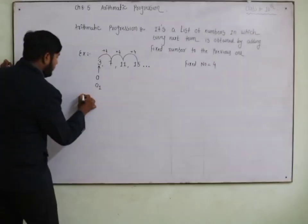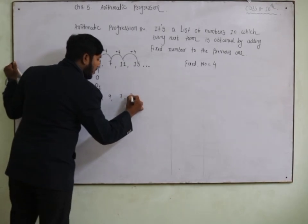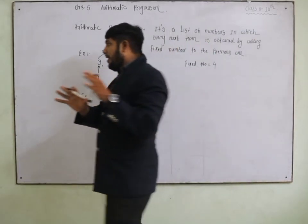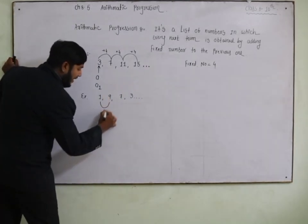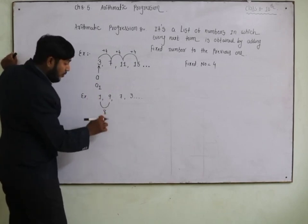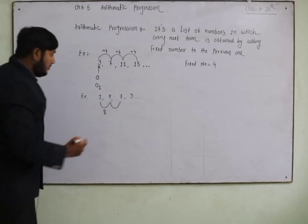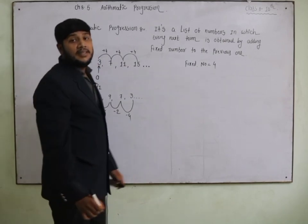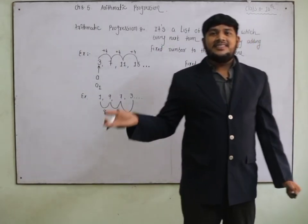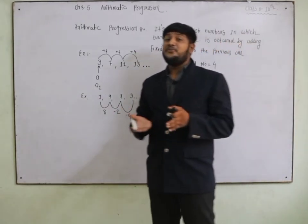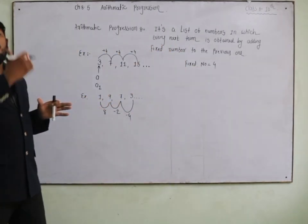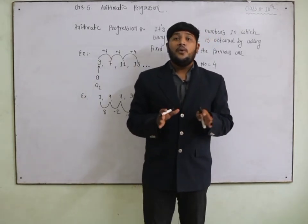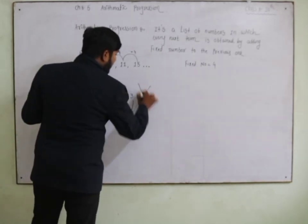Let us take another example: 1, 9, 7, 3. This is a sequence, but observe: the difference between the first two terms is 8, between the next two terms it is negative 2, and then negative 4. Since the difference is different in each case, we cannot call this an Arithmetic Progression — it is not an AP.